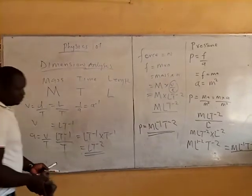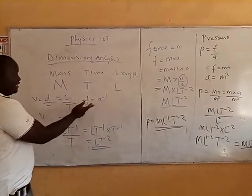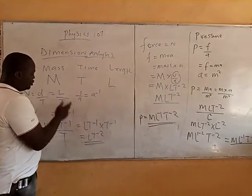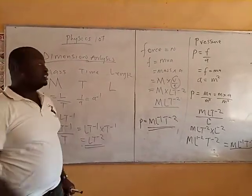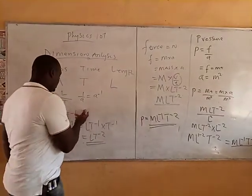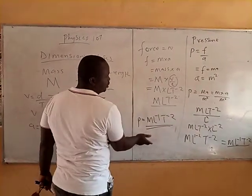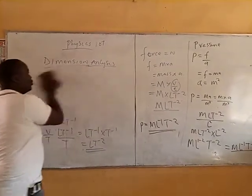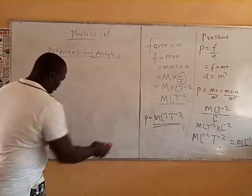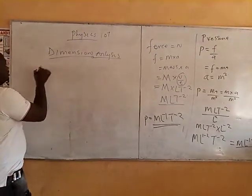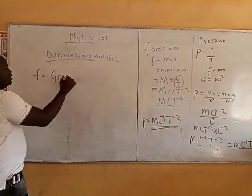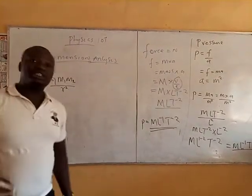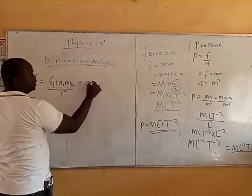Good. Now, having derived acceleration, velocity, force, and pressure, I usually advise my students to memorize the dimensions of velocity and acceleration because you will see them in a lot of these problems. We have tried velocity, acceleration, force, and pressure. Now we are going to continue with more quantities. For Newton's law of gravitation, force F equals G times M₁M₂ divided by R squared. I can ask you: what is the dimension of G, the gravitational constant?